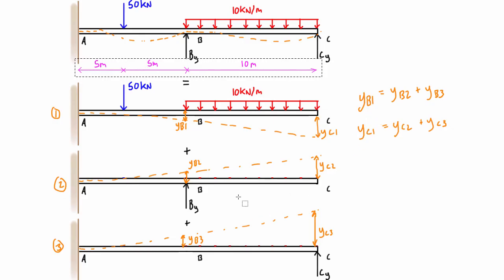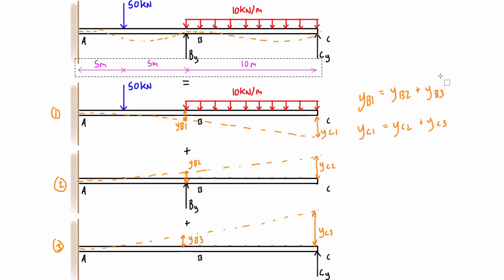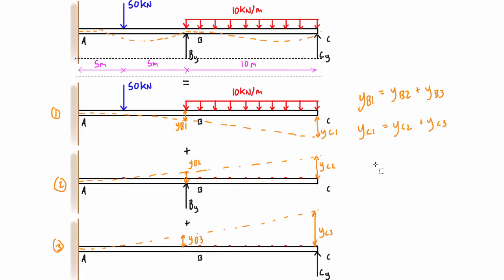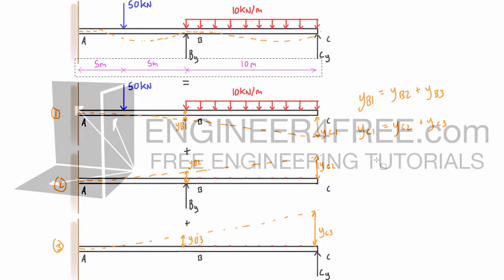In the next parts of the video we'll repeat that same process for case 2 and case 3, giving us YB2, YC2, YB3, and YC3. Once we have all those, we can solve the system of equations simultaneously to find all the reactions, then draw the complete shear force diagram and bending moment diagram. For second-degree or higher statically indeterminate problems, the force method takes a long time — so join me in the next video to keep going.